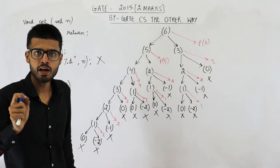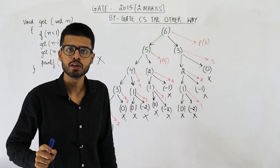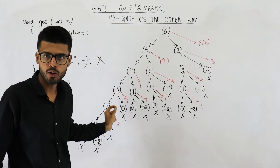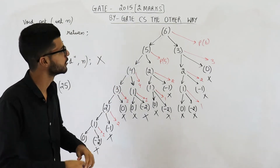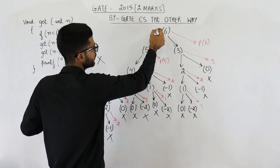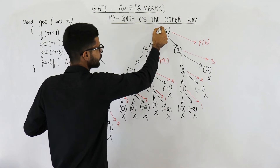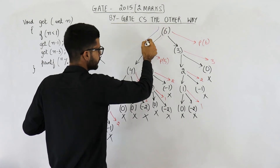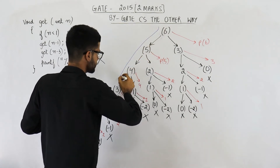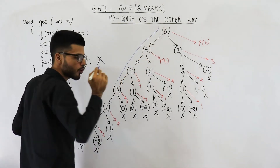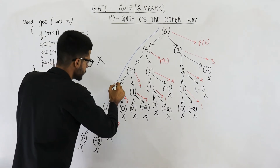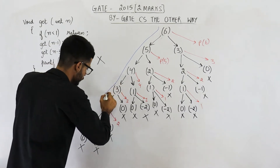For finding the output of a program, just scan such a tree top-down, left to right. Start from the root node — that means start from get(6) — and keep on scanning it for print statements.